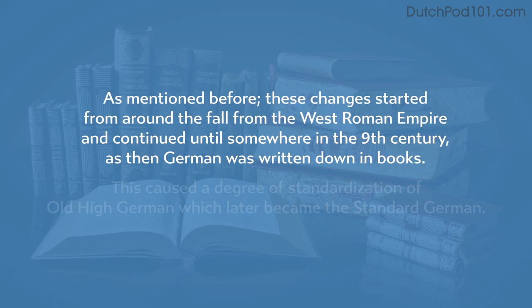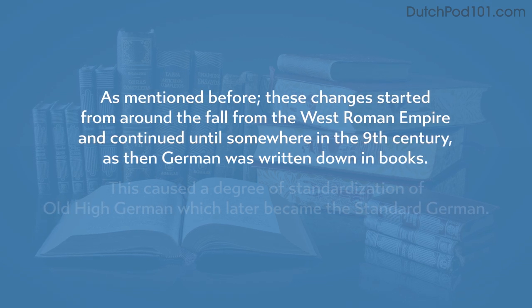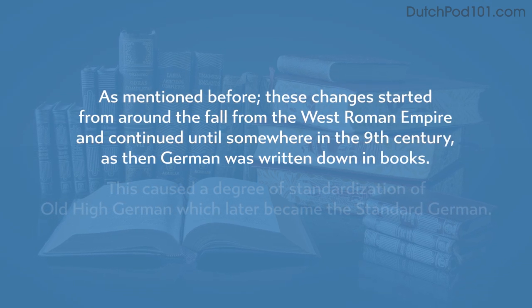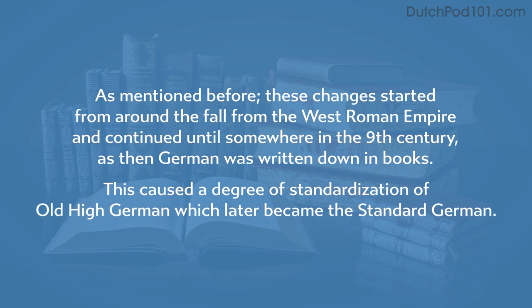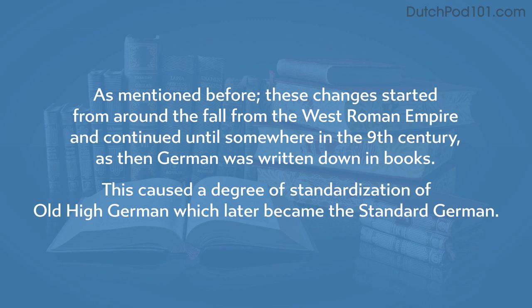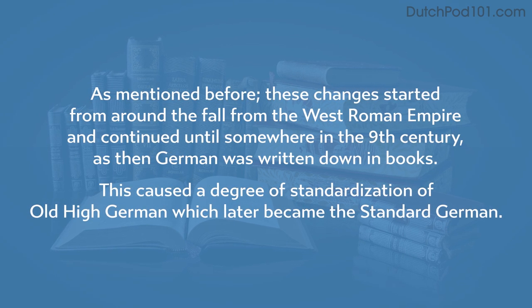These changes started right from around the fall of the West Roman Empire and continued until somewhere in the 9th century, when German was written down in books. This caused a degree of standardization of old high German which later became the standard German. And that wraps up the phases.